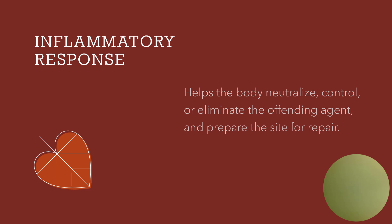The different types of exudate: if the drainage is clear, we call this serous. If the drainage is pink or red — it looks like watery blood or has a pink tinge — we call this serosanguinous. If the exudate is red, straight blood, then we call this sanguinous. And if there is pus in the exudate, this is purulent.